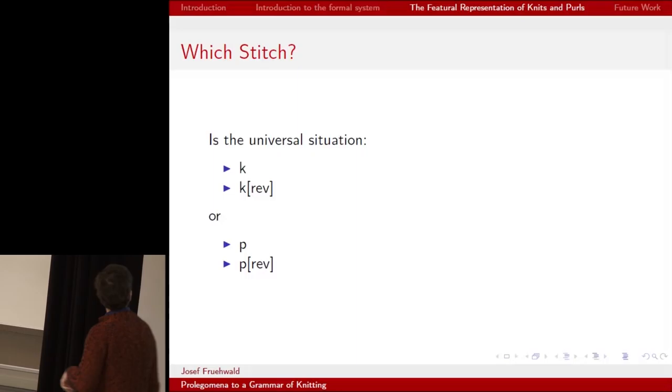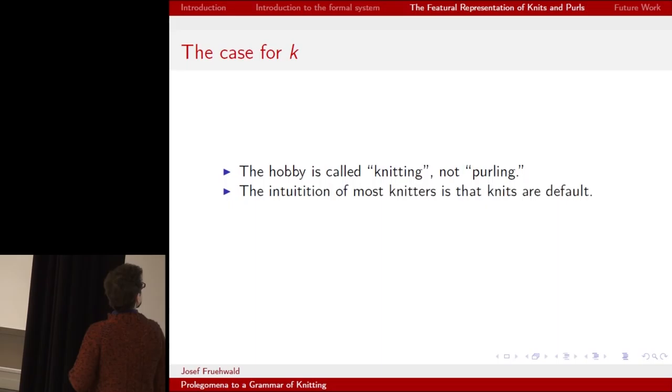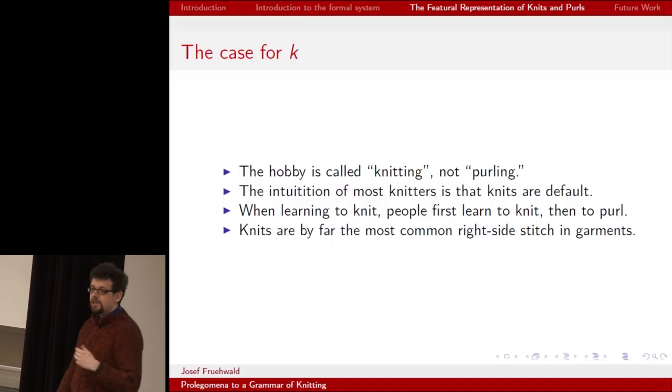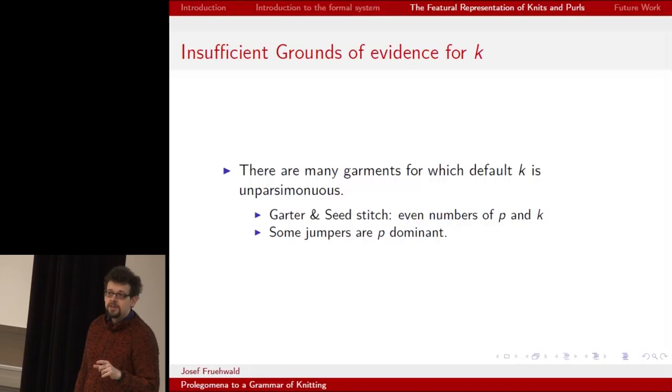But the question is, which is the universal feature? Is it knit or purl? And there's evidence in favor of knit. Sociologically, the hobby is called knitting, not purling. Native knitter intuition is that knits are default. We have order of acquisition data. When people learn to knit, they first learn how to knit and then purl. And typologically, knits are by far the most common outward facing stitch.